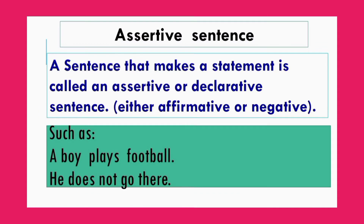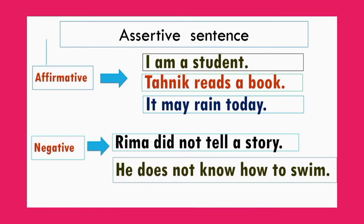Assertive sentence: a sentence that makes a statement is called an assertive or declarative sentence, either affirmative or negative. A sentence that expresses a fact or statement is called an assertive sentence. Such as: 'A boy plays football.' 'He does not go there.' 'I am a student.' 'Tahanik reads a book.' 'It may rain today.'